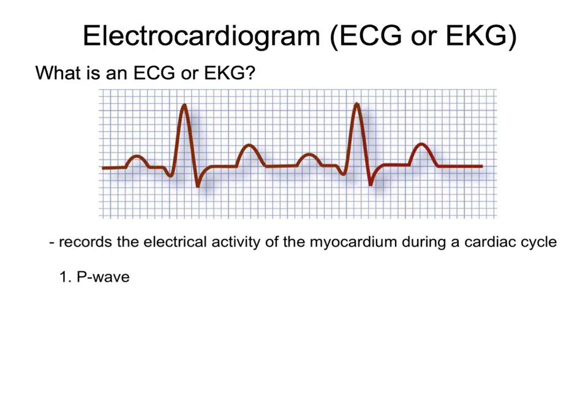The next part of an EKG is called the QRS complex. The QRS complex represents the depolarization of the ventricles, and during the depolarization of the ventricles, the ventricles are contracting.